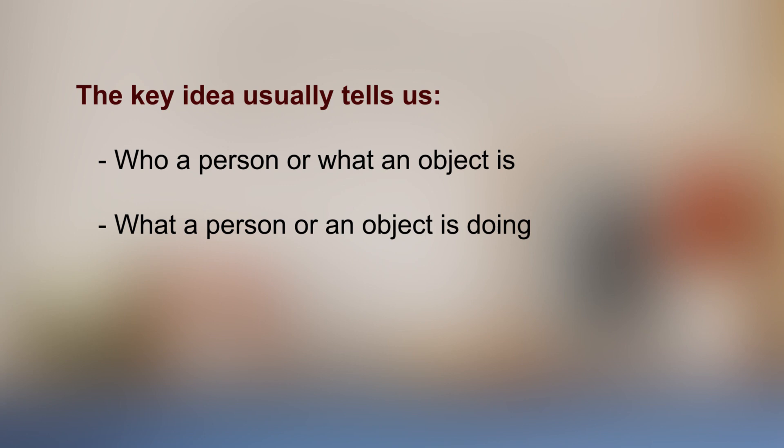Today, we are going to work with one important sub-skill or ability. We are going to focus on the ability to identify the main idea of a paragraph. A good way to start is to examine the main idea of a sentence before building up to read a larger piece of text. While a sentence might hold a lot of information, it usually offers a key idea, and the key idea usually tells us who a person is or what an object is, or what a person or an object is doing.